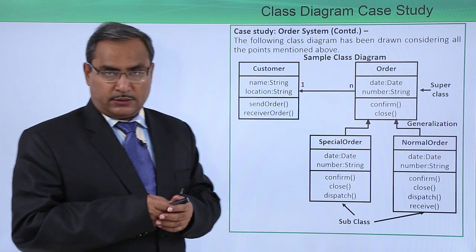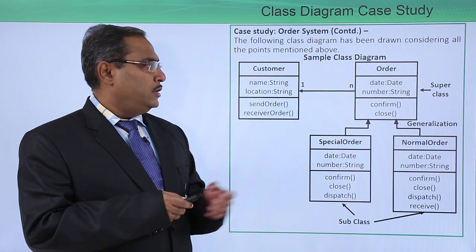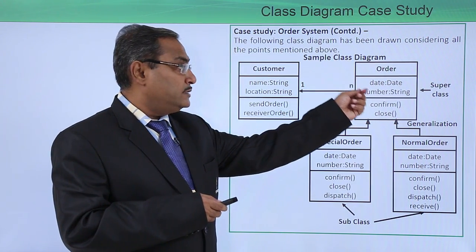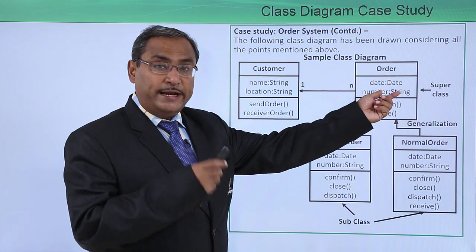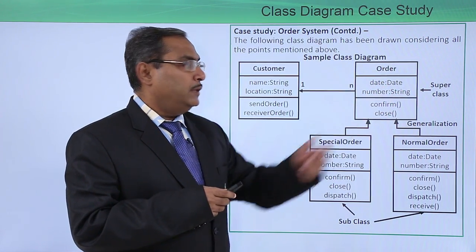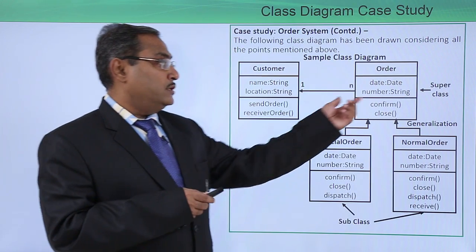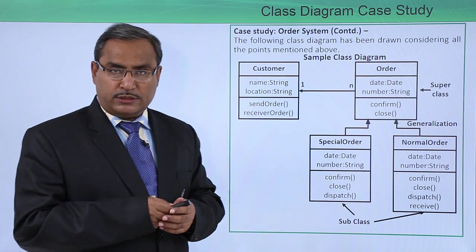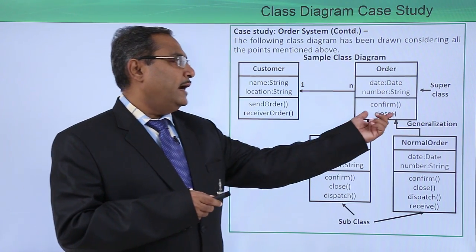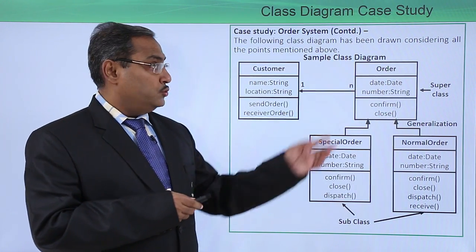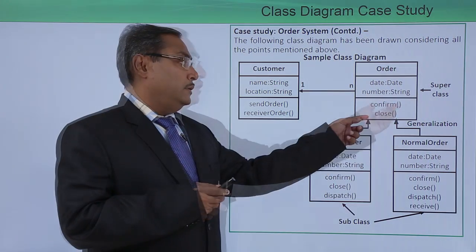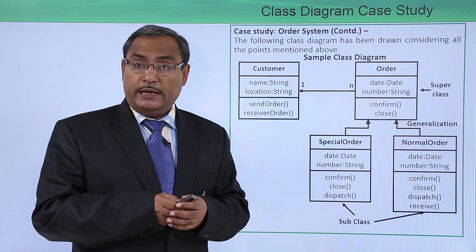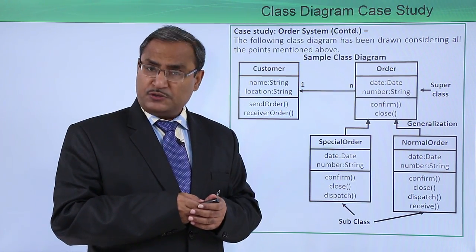The Order class is our super class, also known as the base class. It has two attributes: date (of type Date) and number (of type String) — representing the order date and order number. It also has two methods: confirm and close. This is the abstract class, so the bodies of confirm and close may not be defined within this class itself.